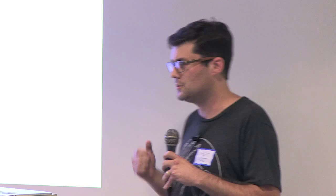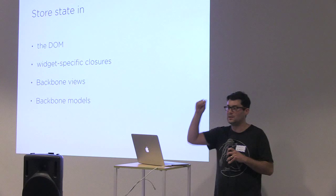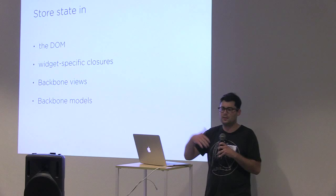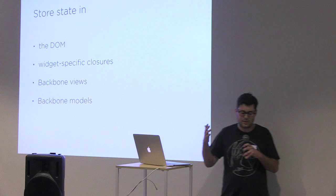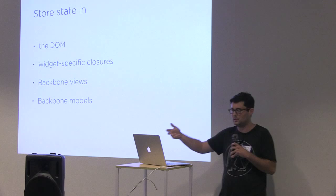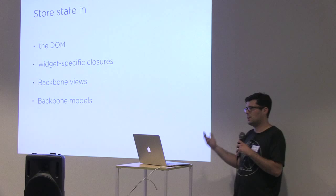Where are candidate places to store interaction state? Spoiler alert: we've used all of these. You could store state in the DOM — that's natural for something like a list that's either open or closed, just toggle a class. You can wrap things up in widget-specific closures. You can attach the interaction state to Backbone views, or you might attach it to Backbone models because you have multiple views backing onto the model and want a centralized place to locate the state. The first three are problematic because they all create inter-view dependencies.